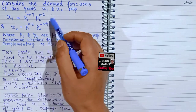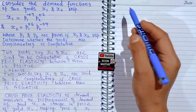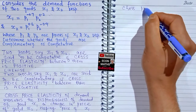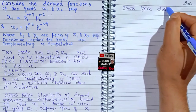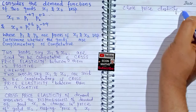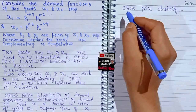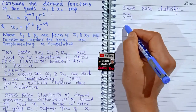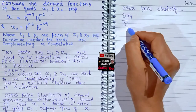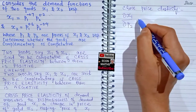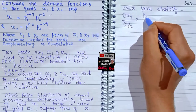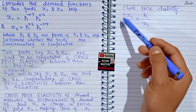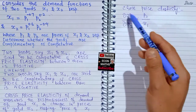Cross price elasticity for good x1 is derived by taking the partial derivative of the demand for good x1 with respect to the change in the price of good x2, then multiplying by P2 divided by x1. If this whole term comes out to be positive, we say the goods are substitutes of each other.